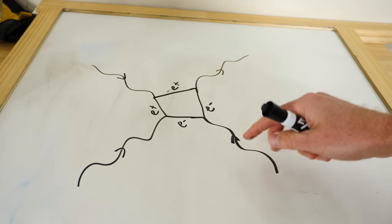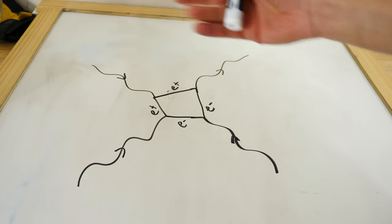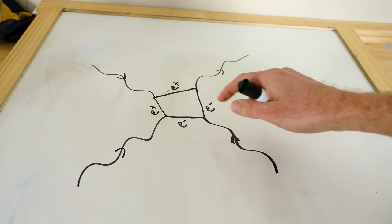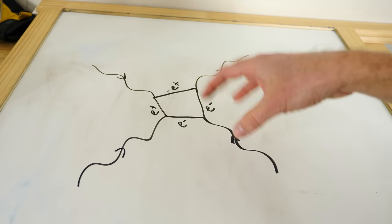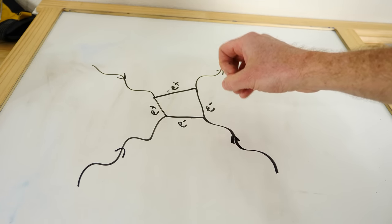So this means you can actually have light that scatters light. This type of scattering is called Delbrick scattering, and it's literally light interacting with other light, and it does it through these quantum fluctuations that happen.